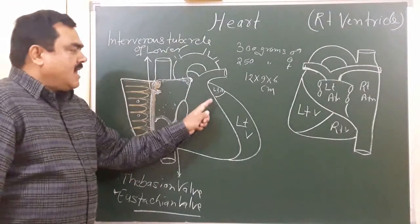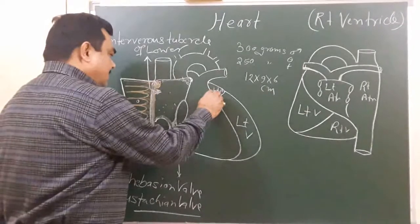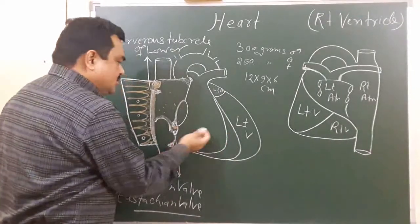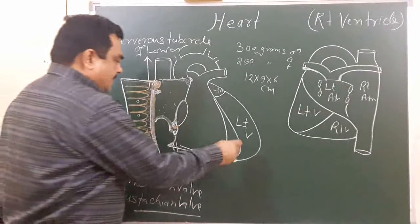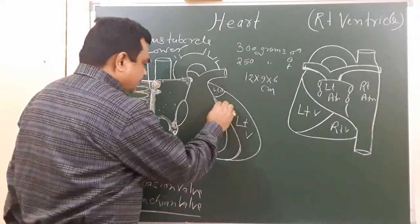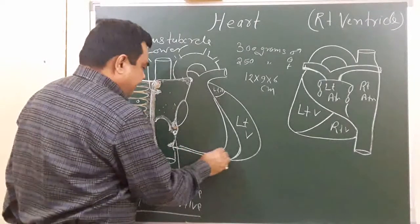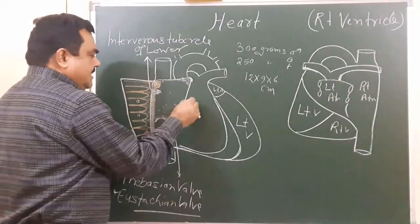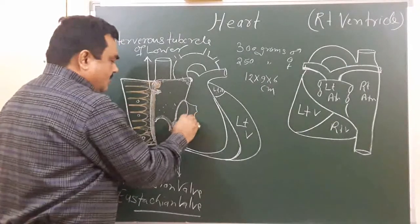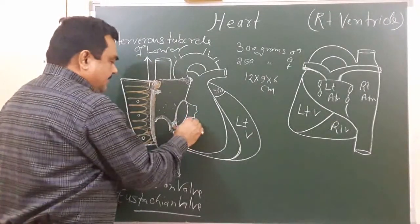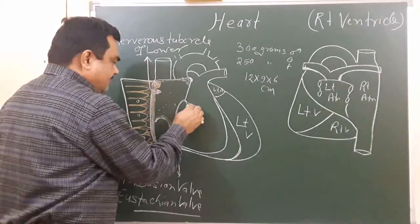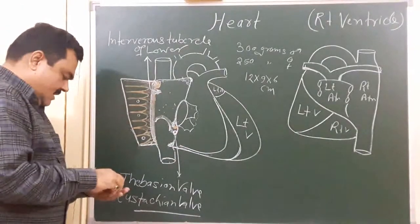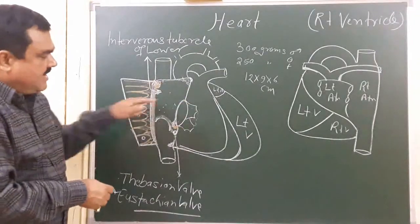Now we will discuss about the right ventricle. This is the right atrioventricular orifice. It is guarded by valves — there are three valves. This is the tricuspid valve. This chamber has two parts.